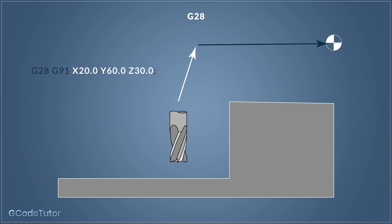Another example: G28 G91 X20 Y60 Z30 — the machine will go to the position X20 Y60 Z30 before it moves to the machine zero position. These dimensions are taken from the last known position of the cutter because we are using incremental mode with G91. If we were still in absolute mode, it would take these dimensions from our working datum, G54 or G55, and we may collide. So it's always safer to switch to incremental so the distance comes from the last known tool position, not the datum used to machine our parts. We really don't want to forget to add G91 to this line.